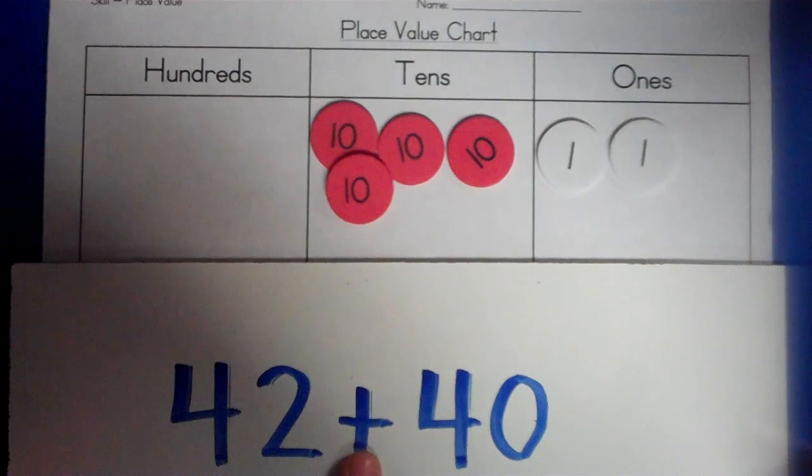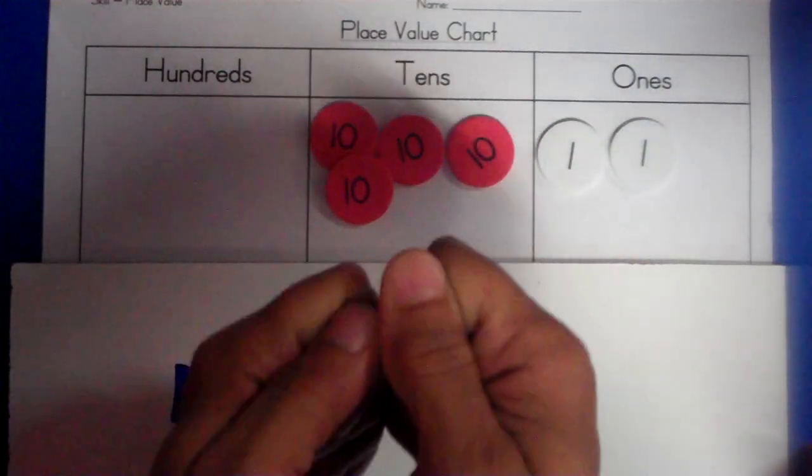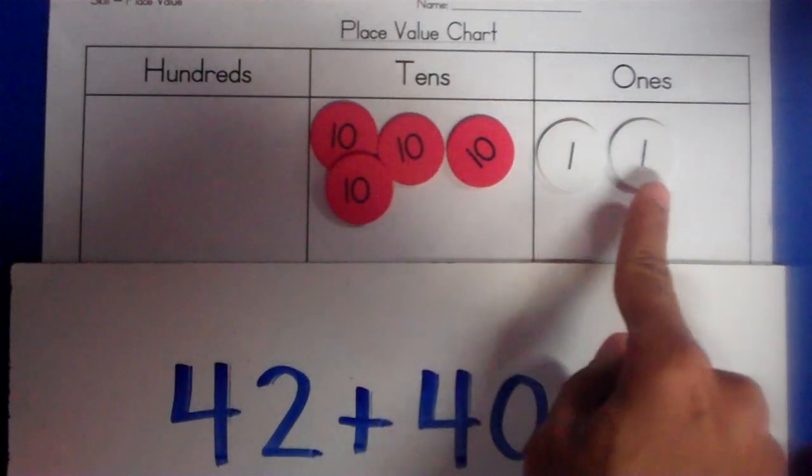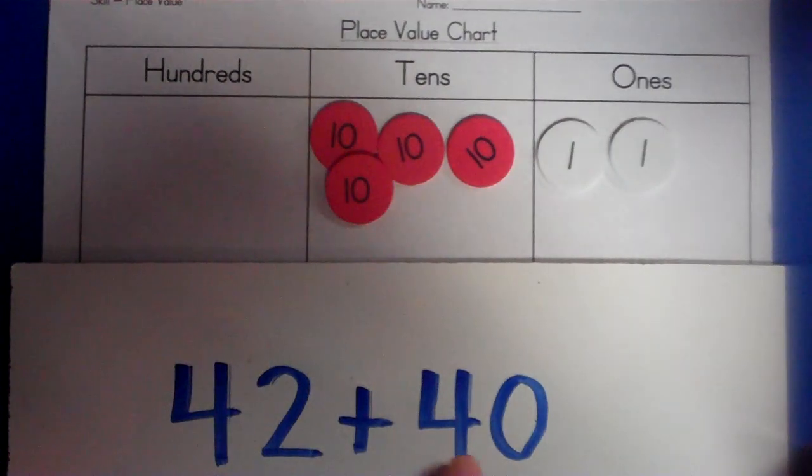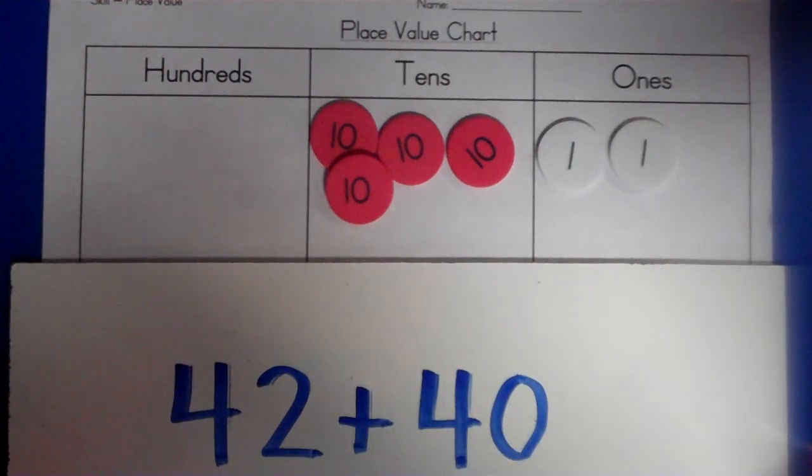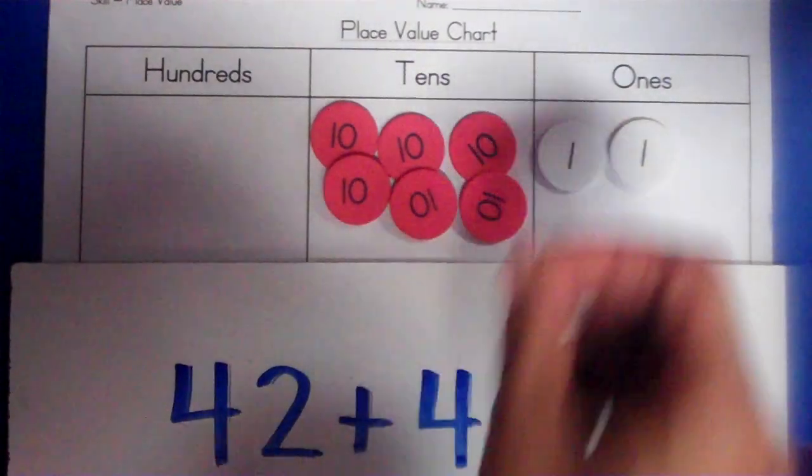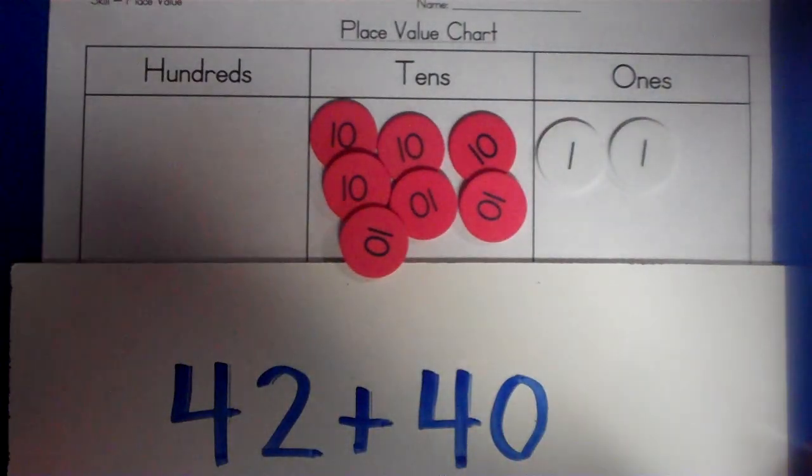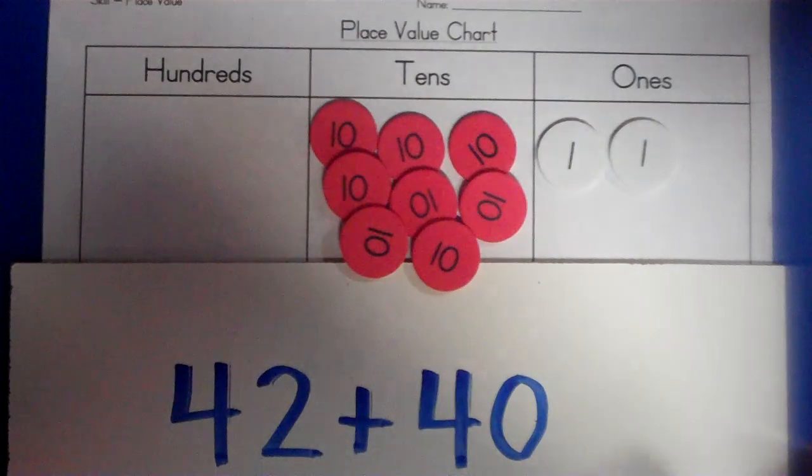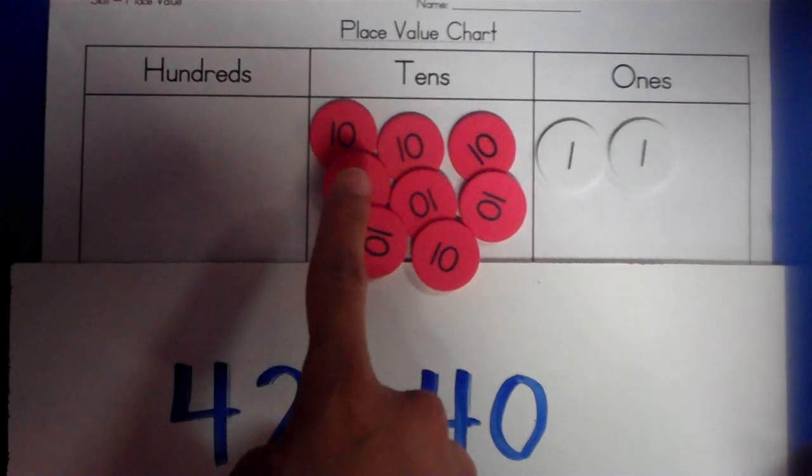Now I come to the operation sign which says to add. Add means to put together. So I'm going to put together 4 tens and 2 ones, 42, together with 4 tens and 0 ones. I'm adding 4 tens to the tens place because they are tens. Now, what is the answer? How many tens do I have?